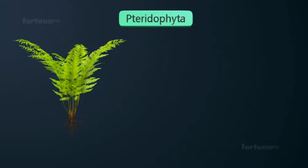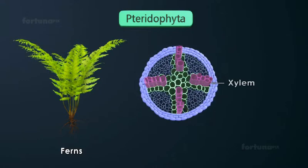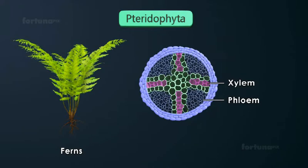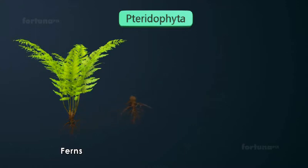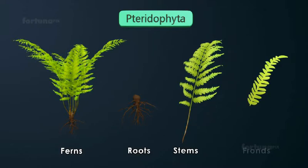Pteridophytes, which include ferns, have vascular tissue made up of xylem and phloem that is responsible for the transportation of water and nutrients. They also have roots, stems, and easily recognizable leaf-like fronds.